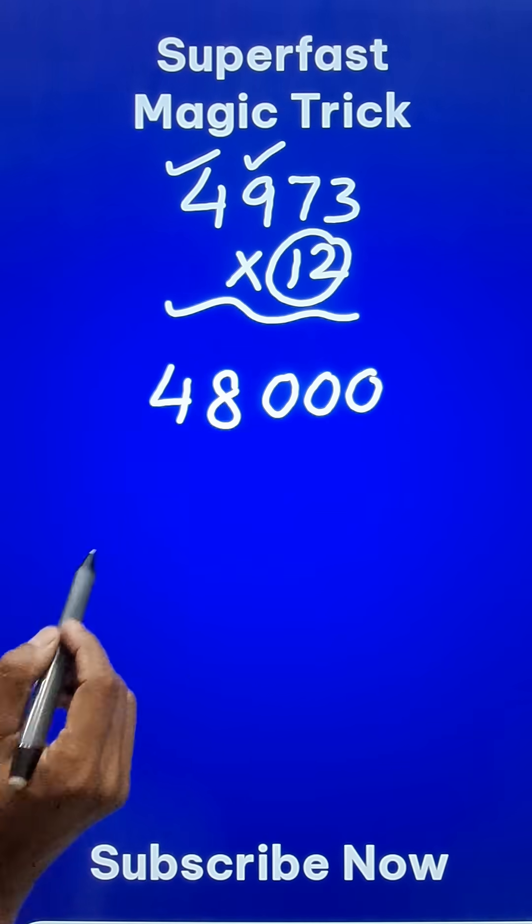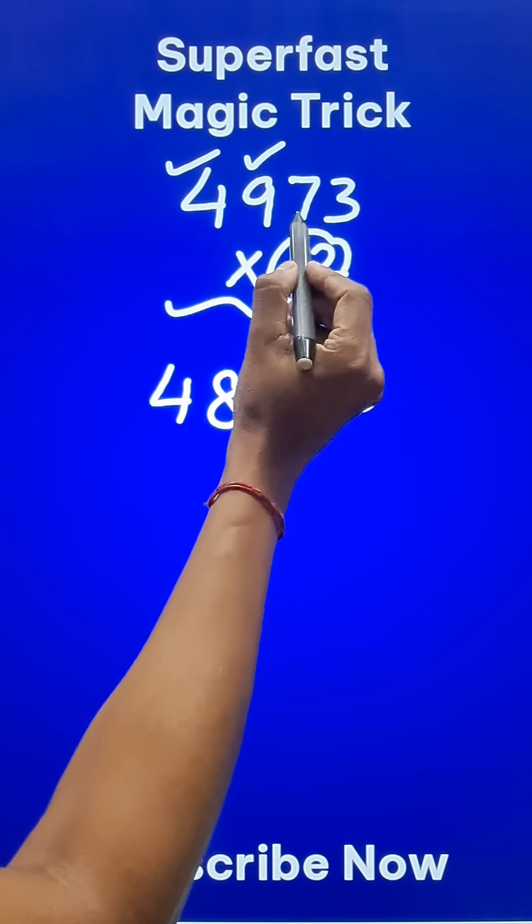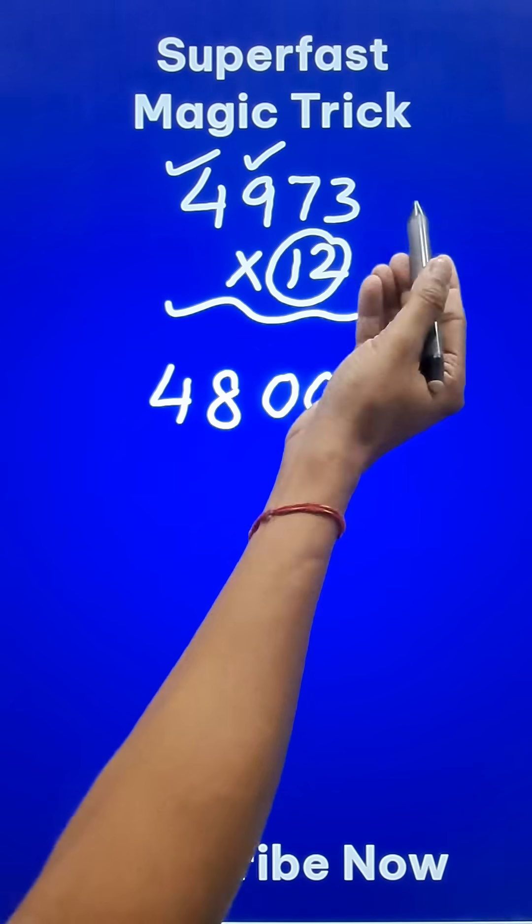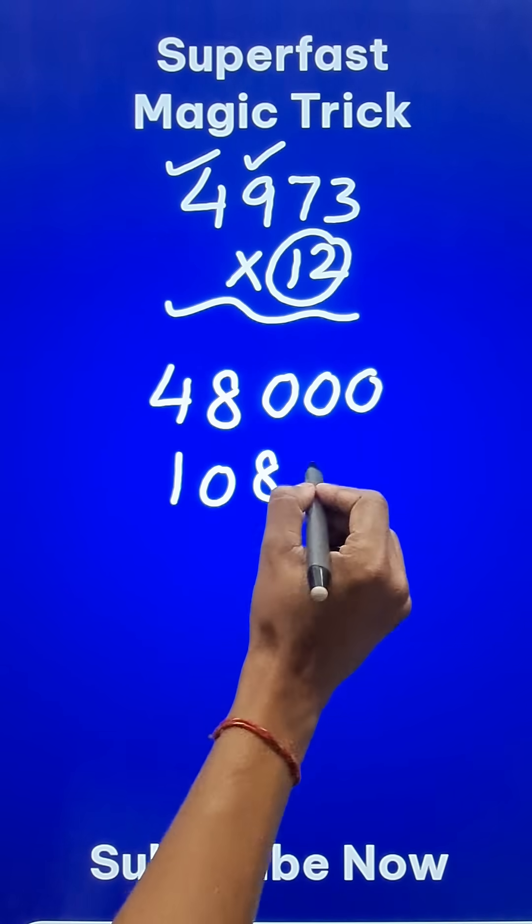Likewise do 12 times 9 which is 108 and after 9 we have 2 digits. So 2 zeros. So 108 followed by 2 zeros.